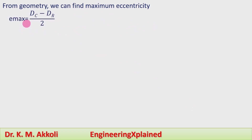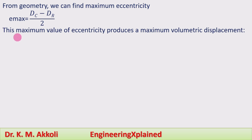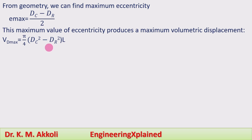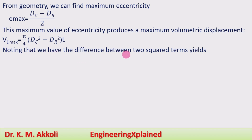From the geometry, the maximum eccentricity is: e_max = (Dc − Dr) / 2. This maximum eccentricity produces the maximum volumetric displacement, which is given by the cross-sectional area of the cam ring minus the cross-sectional area of the rotor, multiplied by the width L: Vd_max = π/4 · (Dc² − Dr²) · L.